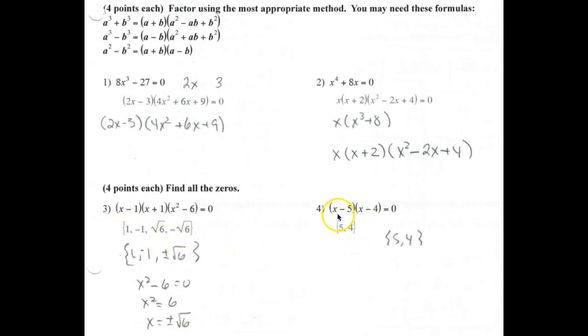For this one, if I set x - 5 equal to 0 and solve for x, I get 5. And when I set x - 4 equal to 0 and solve for x, I get 4.